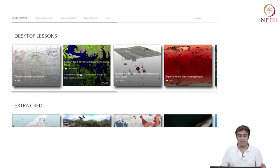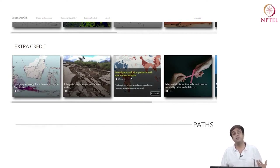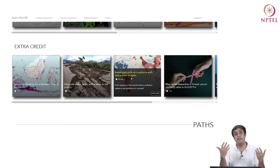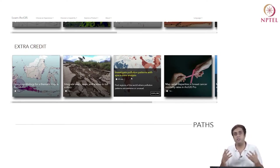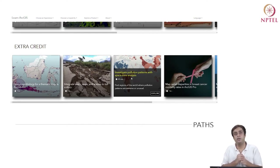Apart from that, there are very interesting sessions: classifying land cover, exploring future climate projections, design symbology on a thematic map — something we will also study in this module. There are things like investigating pollution patterns. If you're from Delhi or India in general, you'll be very interested in that. Agencies like the Central Pollution Control Board and Delhi Pollution Control Committee provide incredible amounts of mappable data that can be analyzed using the tools you've studied. All these modules can be exploited for your own benefit.